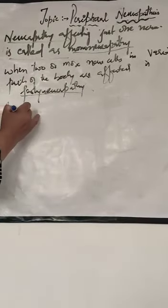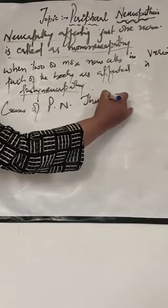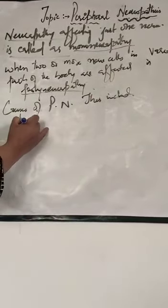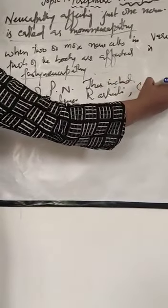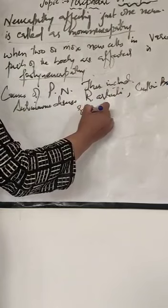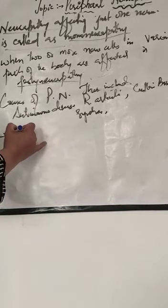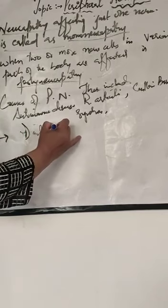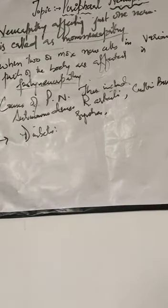The causes of peripheral neuropathy include the following. First, autoimmune disease — if a patient has an autoimmune disease, for example rheumatoid arthritis, Guillain-Barré syndrome, or chronic inflammatory demyelinating polyneuropathy, there are chances of developing neuropathy.